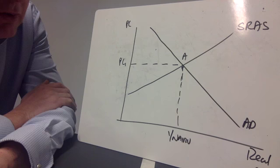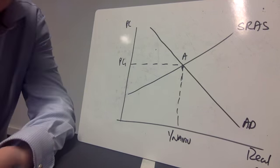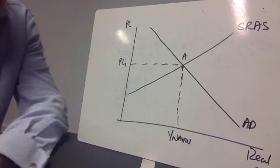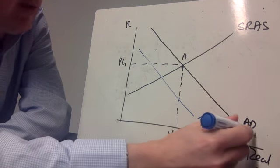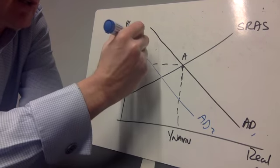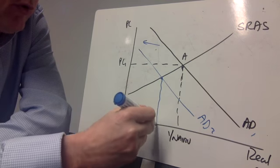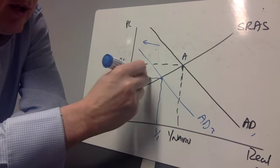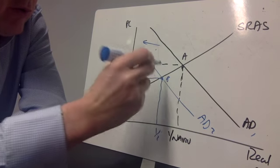So what I'm going to do is take a negative demand shock. I'm going to suppose the economy heads into recession. So AD shifts from AD1 to AD2. The economy is headed into recession, as a result of which GDP falls into Y2, and the economy is in a short-run equilibrium at point B.